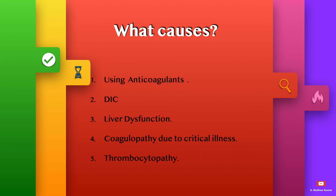What causes this bleeding on ECMO? Using anticoagulants, disseminated intravascular coagulopathy due to liver dysfunction, coagulopathy due to critical illness, and thrombocytopathy.